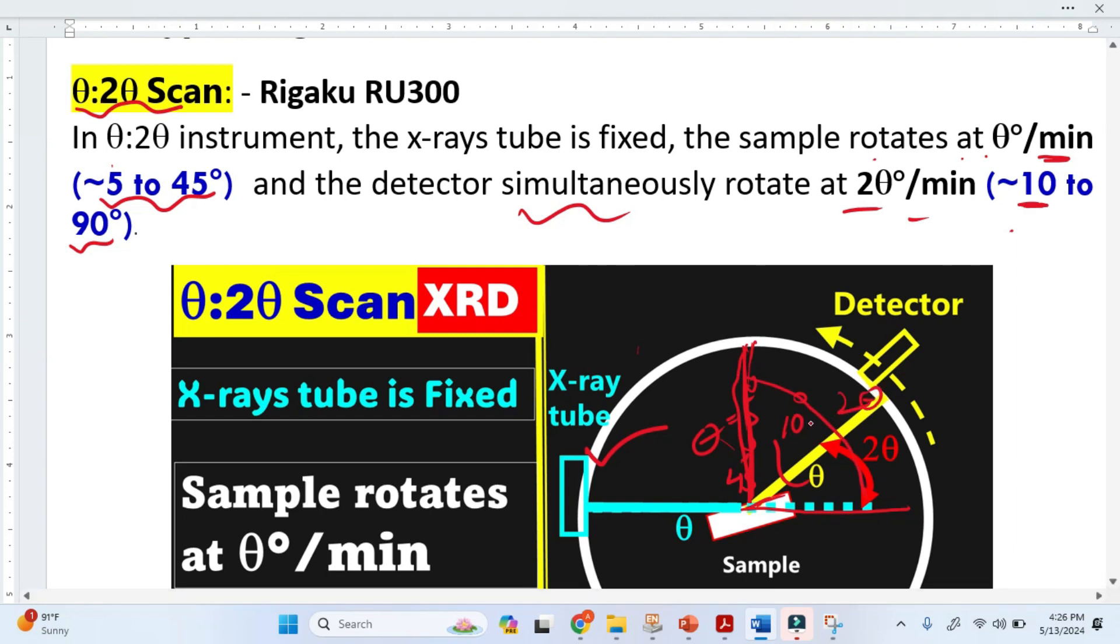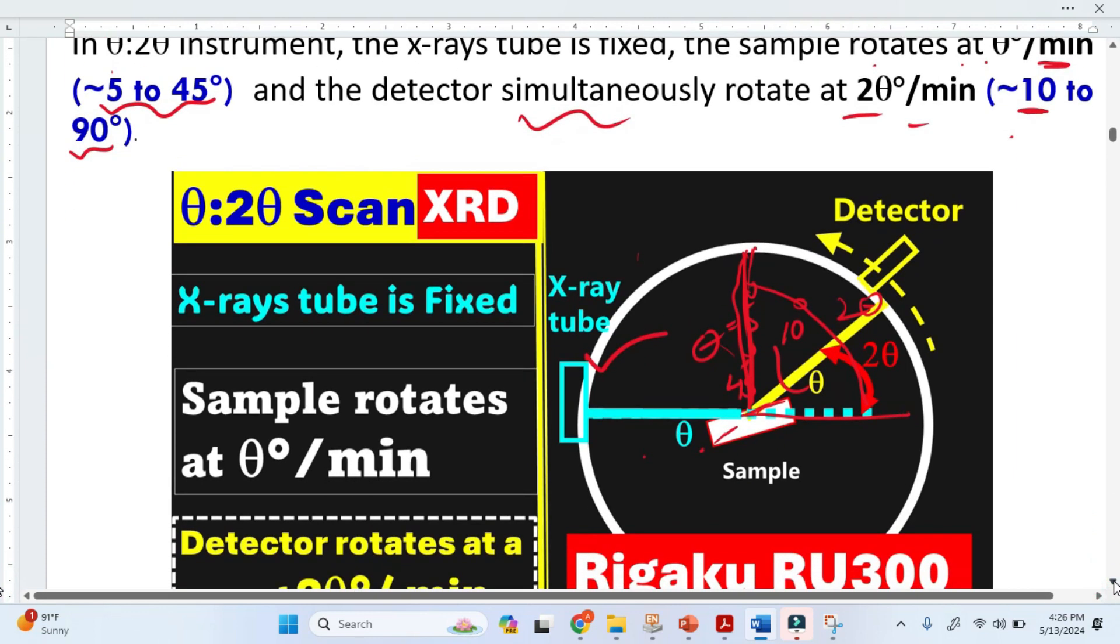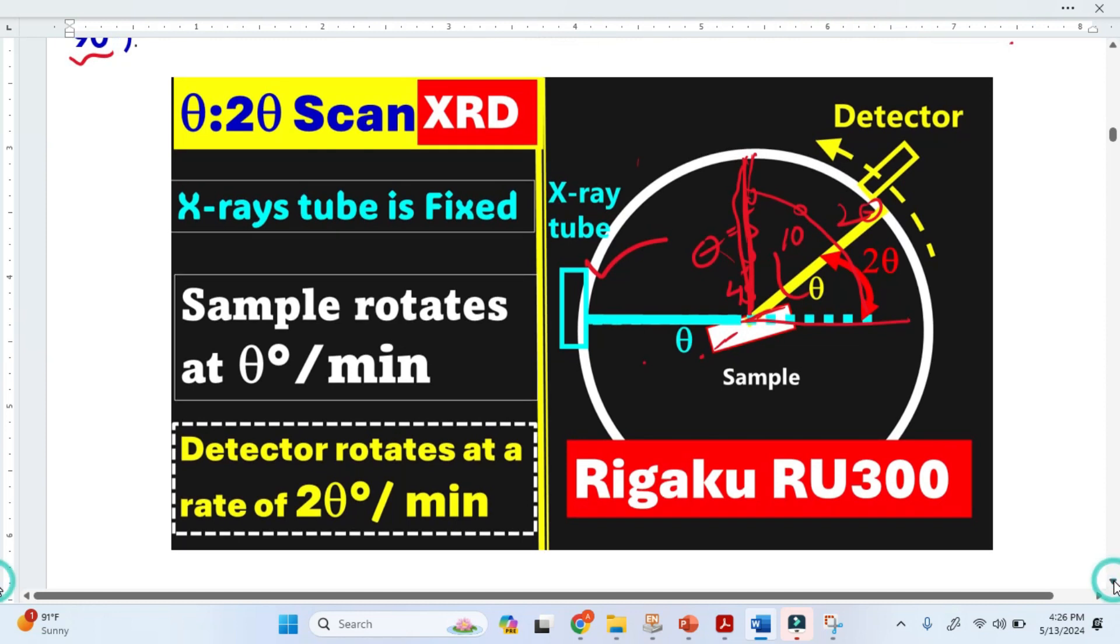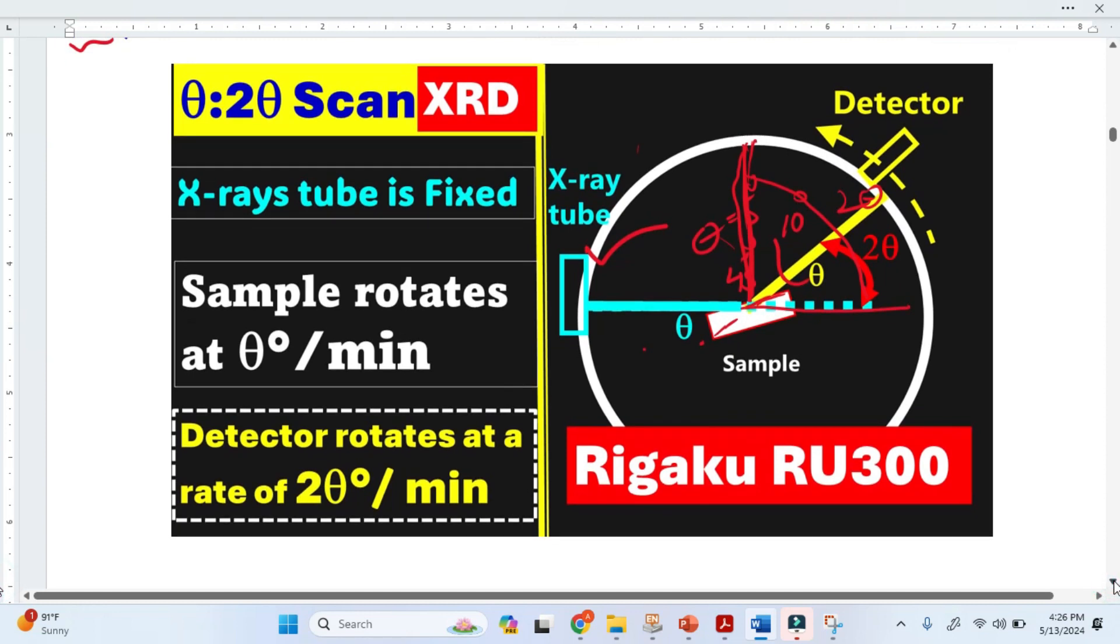We are interested in 2 theta because we want to get the maximum reflection or diffraction. We rotate the sample because the crystal grains are oriented in different directions.